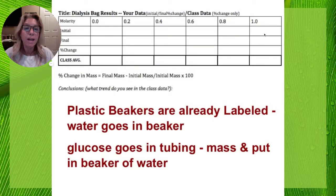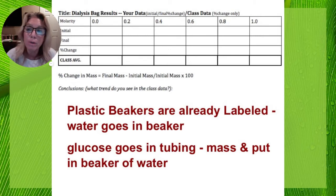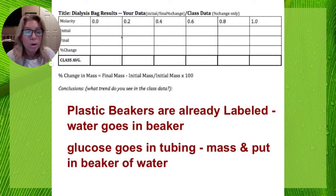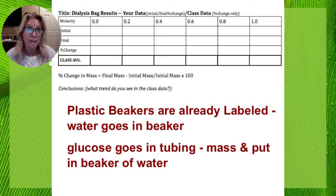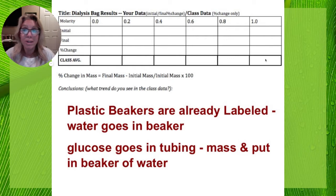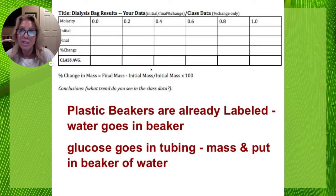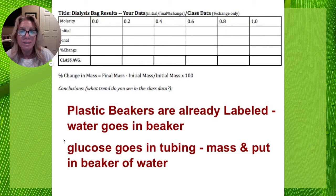We'll be recording that in a data table that I've already provided in the lab map — you'll transfer it to your lab notebook. You'll do three solutions, take your initial mass, final mass, and calculate percent change in mass using the equation: final minus initial over initial. You'll add that to our class data table, just like we did with M&M labs, and we'll get a class average for each solution, throwing out any outliers if it looks like the lab wasn't done well.